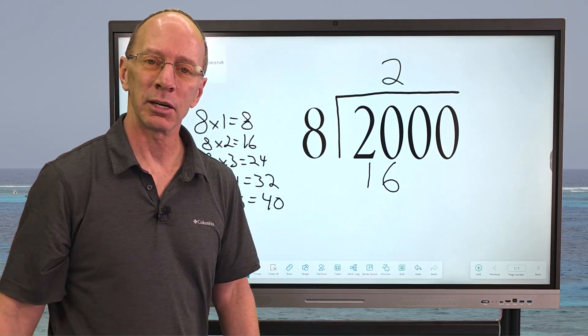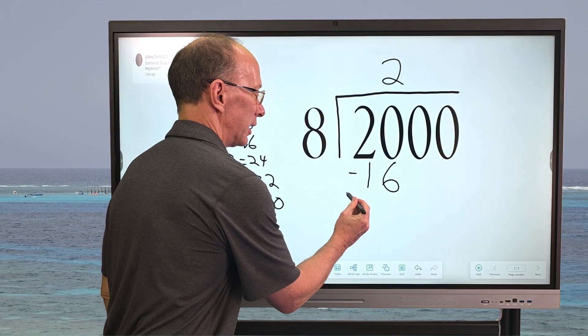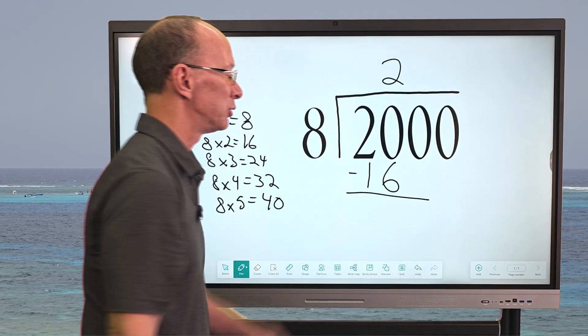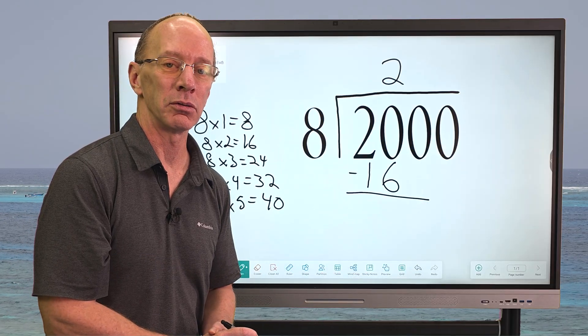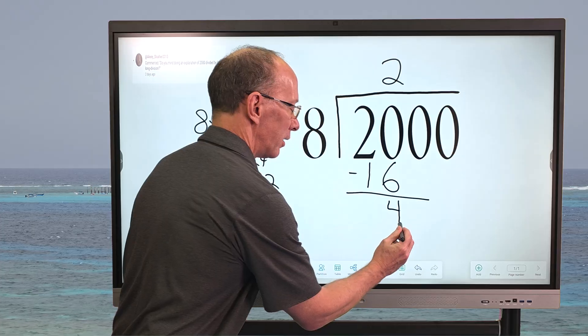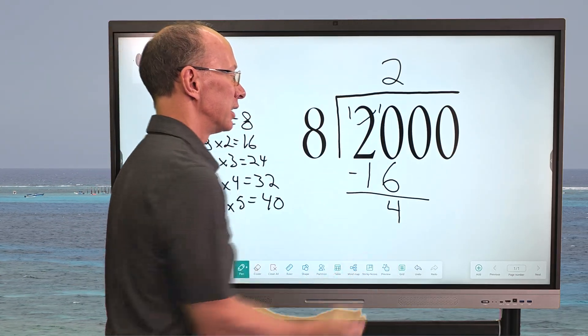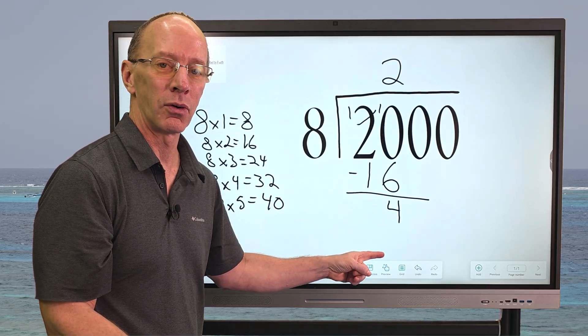And then our next step for long division is subtraction. So I go ahead and subtract, put a line there. And then 20 minus 16 equals 4. And we'll go ahead and put the 4 right there. Remember, if you didn't know that, all you have to do is borrow right here, this would be a 1. This turns into the 10, then 10 minus 6 equals 4.